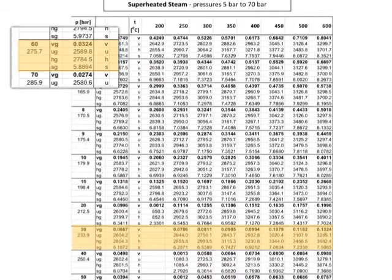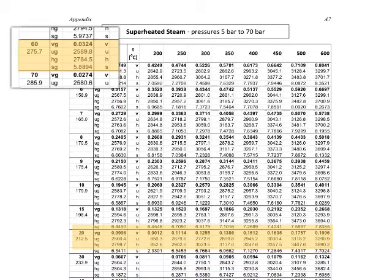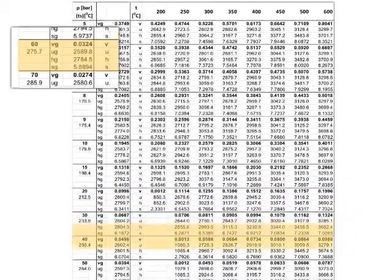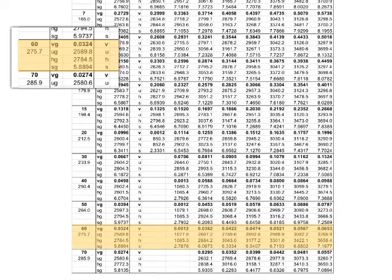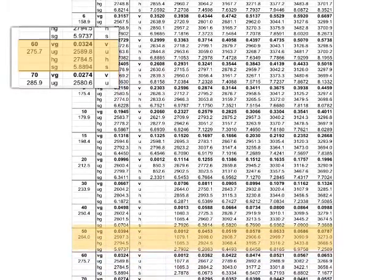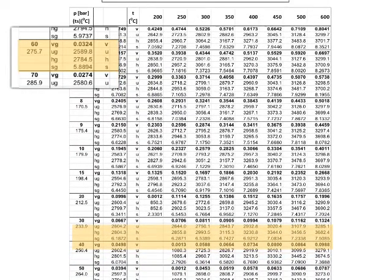We are now in the superheated region, and in particular, we are at page A7. Let's find 60 bar. And if you recall, we are at 500 degrees.